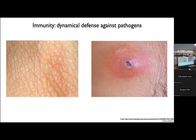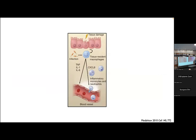Our immune system is a dynamical defense against pathogens. The thing that's really fascinating about this system is that it has to be able to respond to some kind of unexpected challenge that occurs somewhere in your body, flare up and clear an infection, and then return to homeostasis. This is a process that's now fairly well understood biologically, but questions of how length and timescales in the system are controlled is almost entirely open.